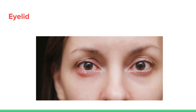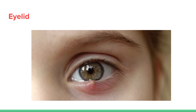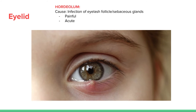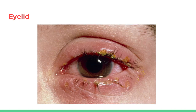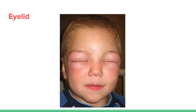For eyelid pathology: a chalazion is painless and chronic — it's obstruction or rupture of the meibomian glands with lipid accumulation. Compare that to a hordeolum (stye), which is an infection of the eyelash follicle or sebaceous gland — it is painful and acute, treated with hot compression. Blepharitis presents with hyperemia, flaking, crusting, and inflammation of the eyelids. Angioedema of the eyelids can be allergic, pseudo-allergic, hereditary, or idiopathic.